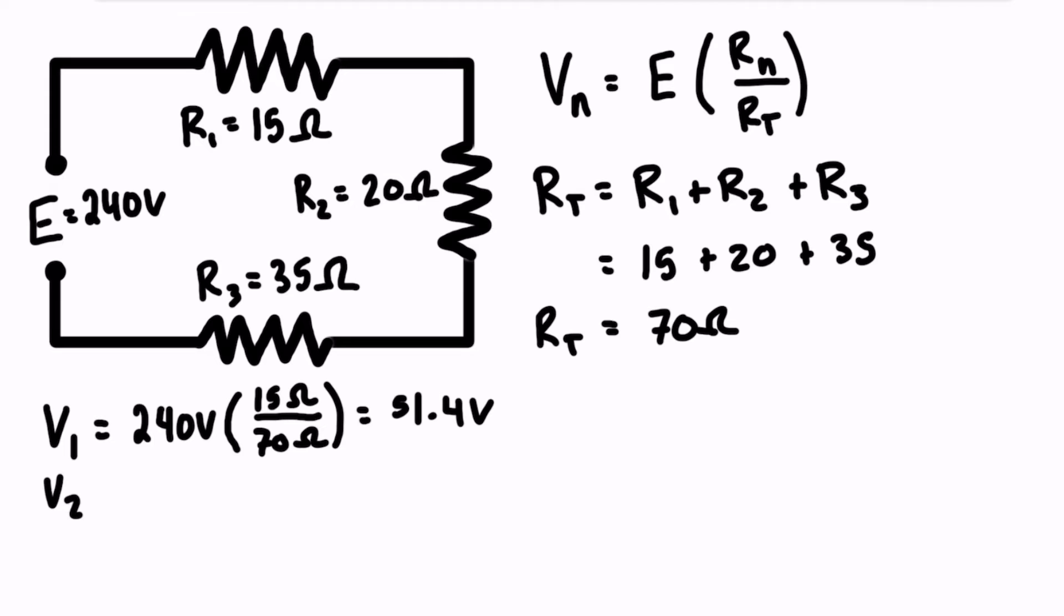Let's check it for V2. So again, it's going to be that source voltage, 240 volts, times the ratio of the resistor we're looking at, which is 20 ohms over 70, over the total resistance there. The ohms are going to cancel out, the units will stay in volts, and we're going to see that the voltage drop is 68.6 volts.